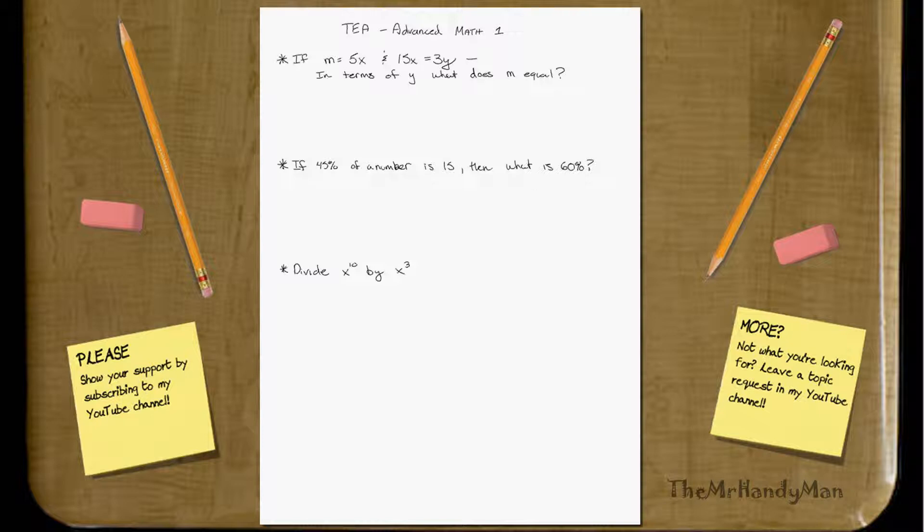If m equals 5x and 15x equals 3y, in terms of y, what does m equal? Well, we start off with what we know. m equals 5x. We know 15x equals 3y.